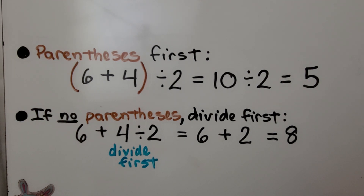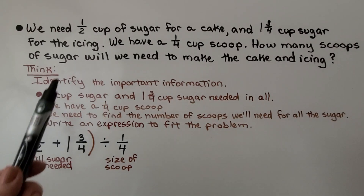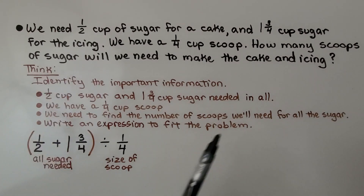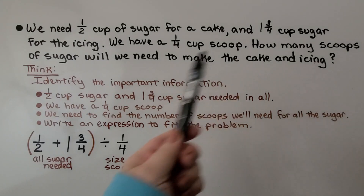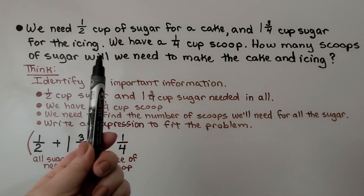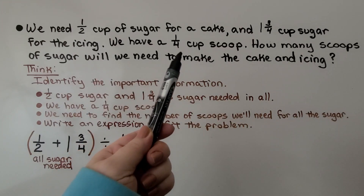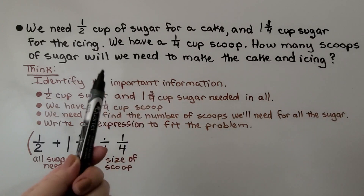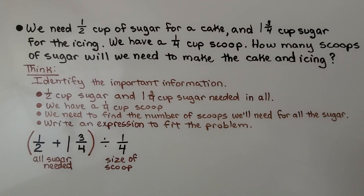So let's try it with some fraction word problems. We need a half cup of sugar for a cake and one and three fourths cups of sugar for the icing. We have a one fourth cup scoop. How many scoops of sugar will we need to make the cake and icing?